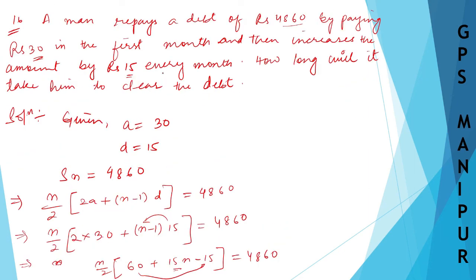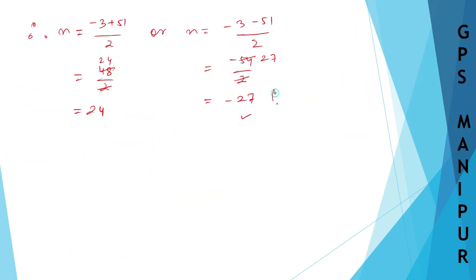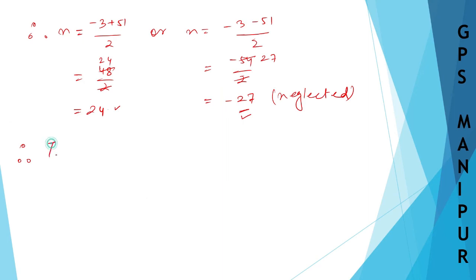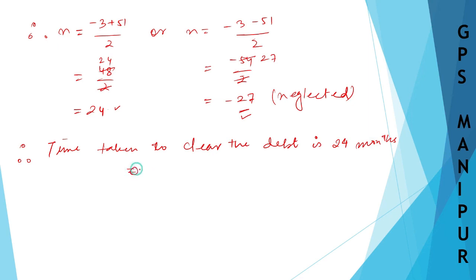Now, N here is a natural number. N cannot be negative, so minus 27 is neglected. Therefore N is equal to 24. The time taken to clear the debt is 24 months, or we can write it as 2 years.